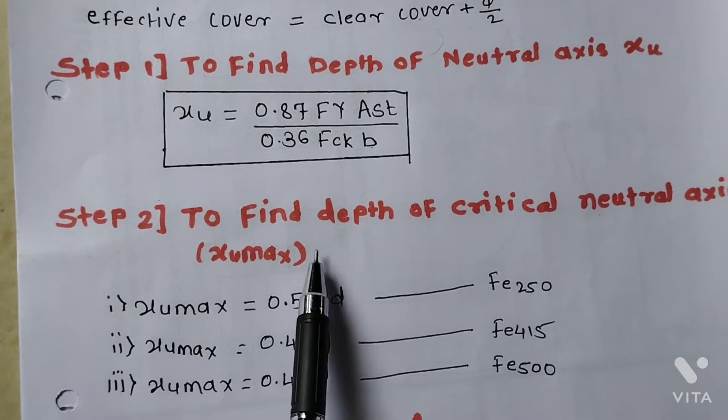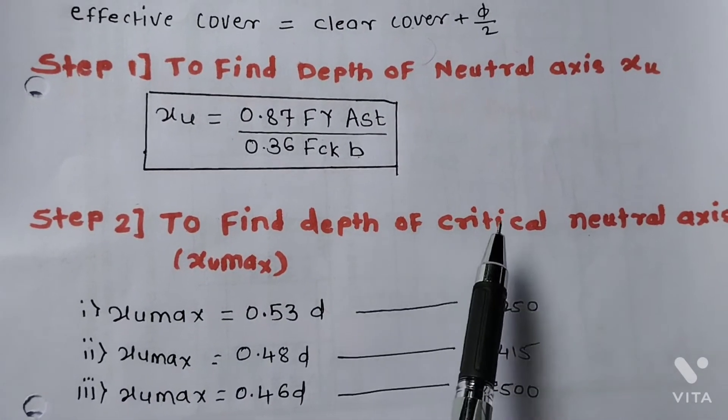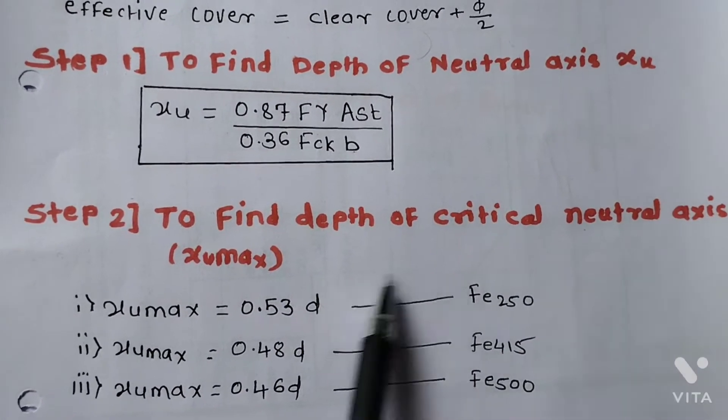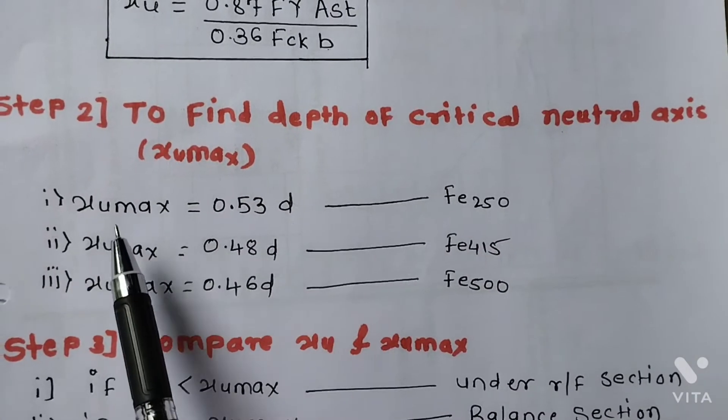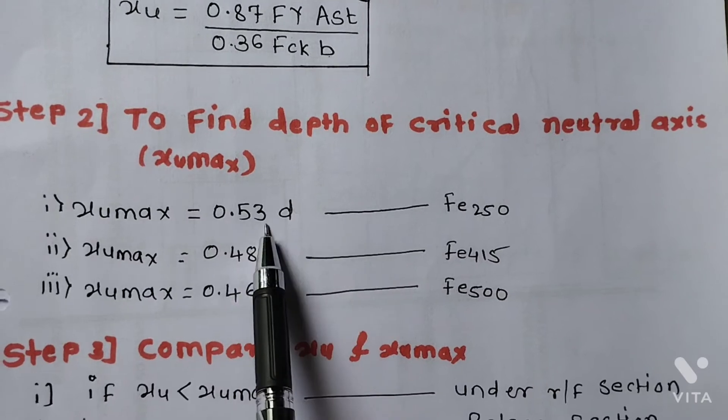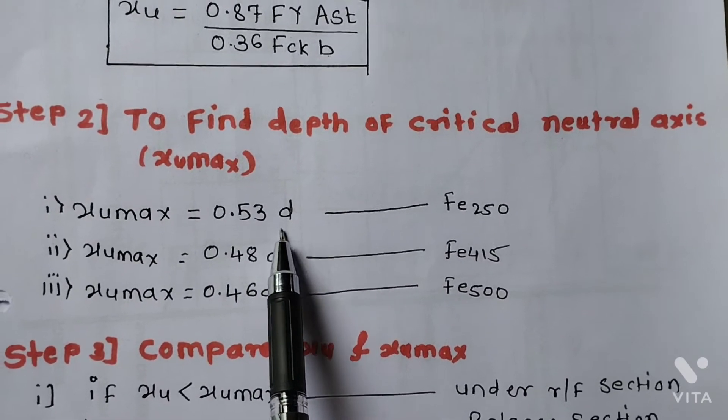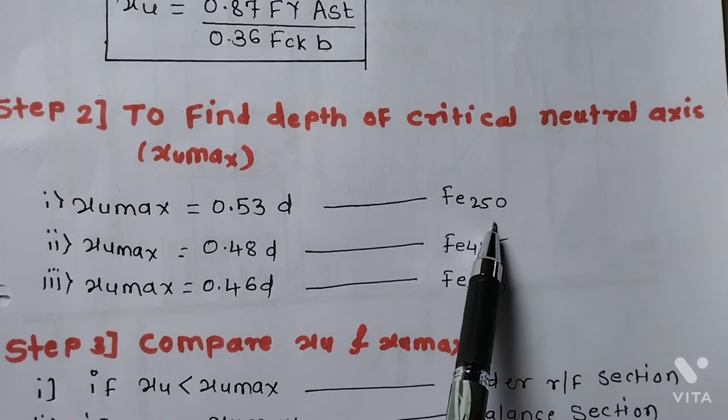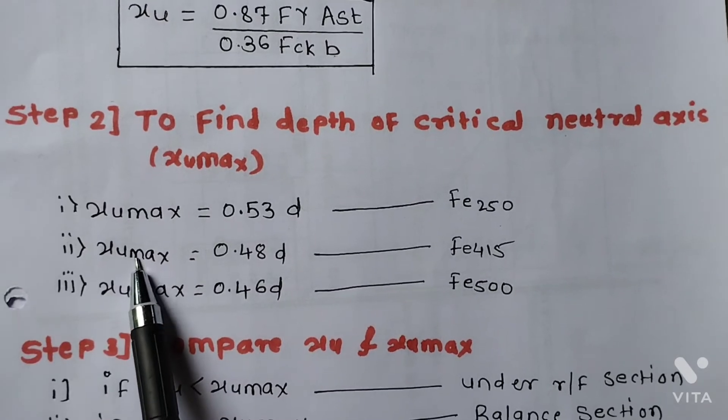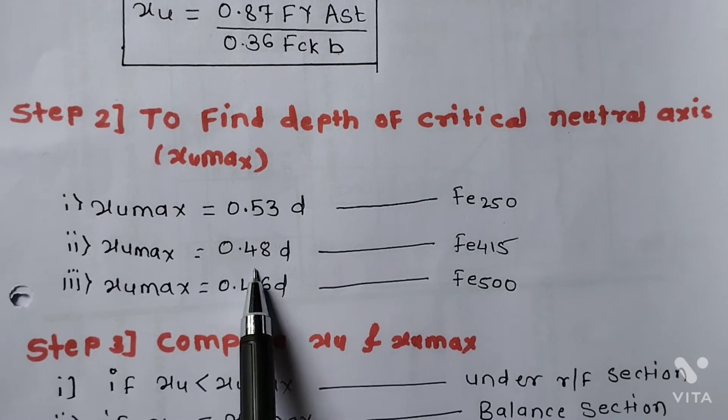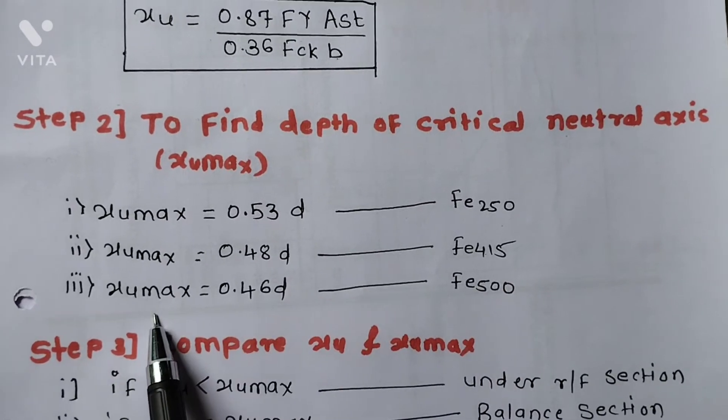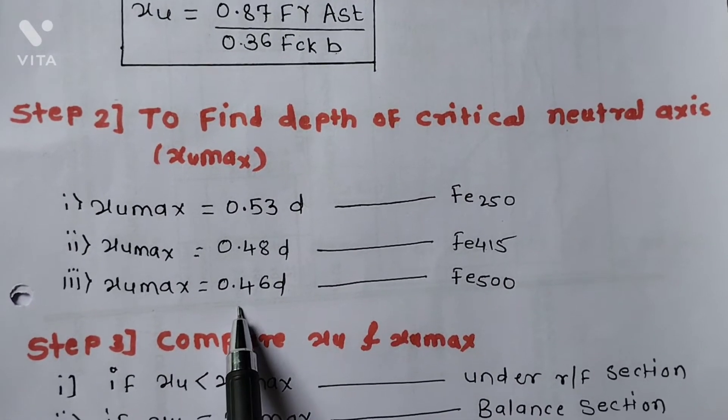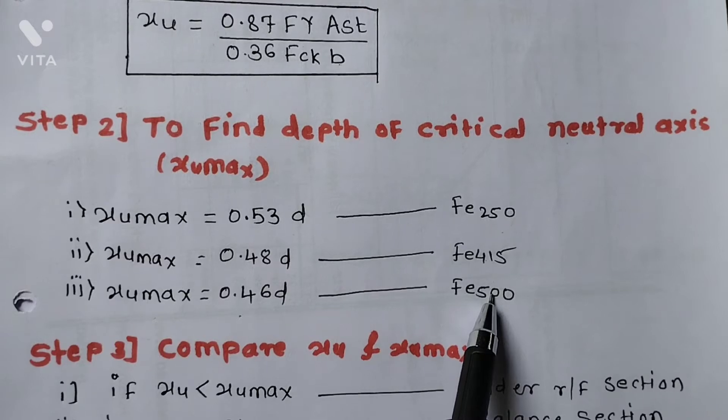Step 2: To find the depth of the critical neutral axis, that is xumax. xumax equals 0.53d for Fe250, xumax equals 0.48d for Fe415, and xumax equals 0.46d for Fe500.